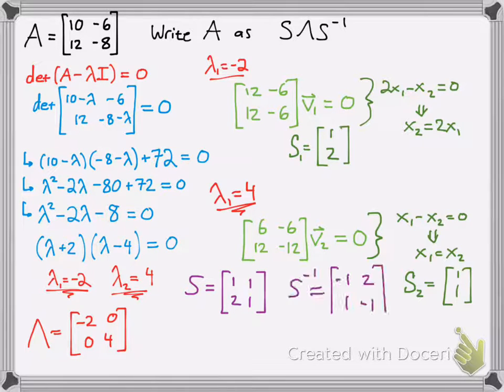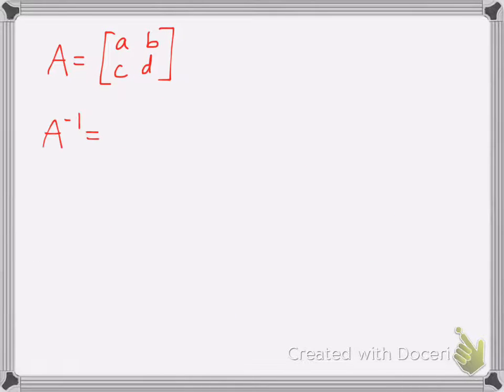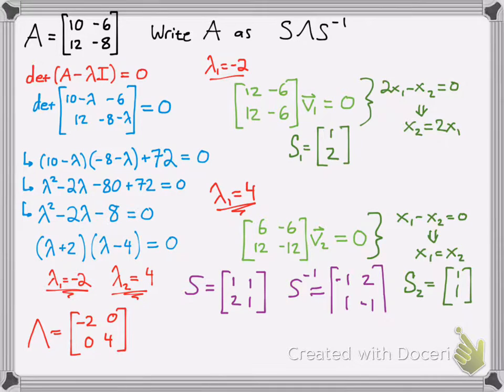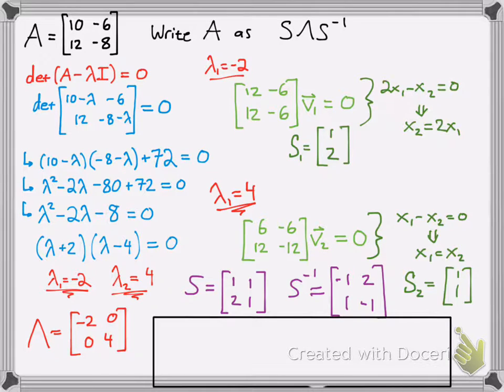And now you take the inverse. Now, shortcut for a 2 by 2 matrix. If you have this A inverse, it's simply 1 over the determinant times the matrix in this form. So you just switch the main diagonal and make B and C have opposite signs. So that's what I did here. And then the determinant, I believe, was negative 1. So then you have to fix that too.